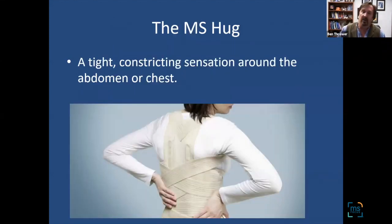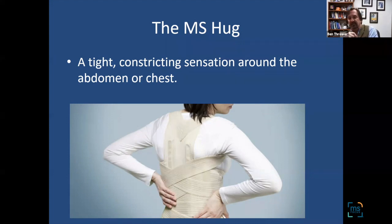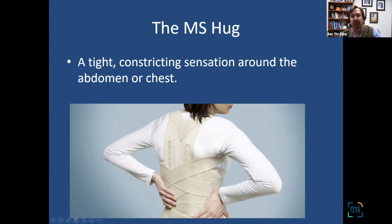The infamous MS hug — when people first learn about MS, it sounds like something everyone would want, but it's frequently not pleasant. It can be just a tight sensation or outright painful. Many people describe it as like a belt around their chest or abdomen. We have muscle bands running between each of our ribs, and when those tighten up they can give a constricting sensation. The abdominal muscles can also tighten up. For many people, the MS hug is a form of spasticity or spasm.